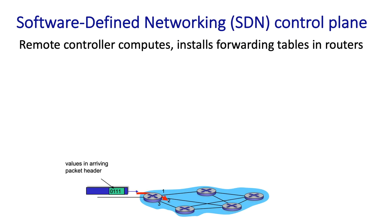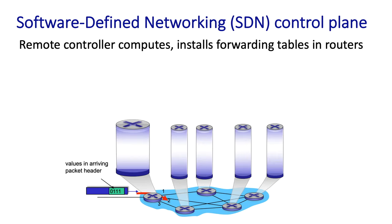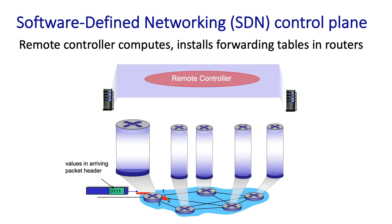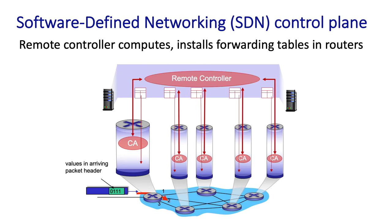The second approach to the network control plane is known as software-defined networking, or SDN. Here, a physically separate remote controller software process computes and distributes the forwarding tables to be used by each and every router under its control.